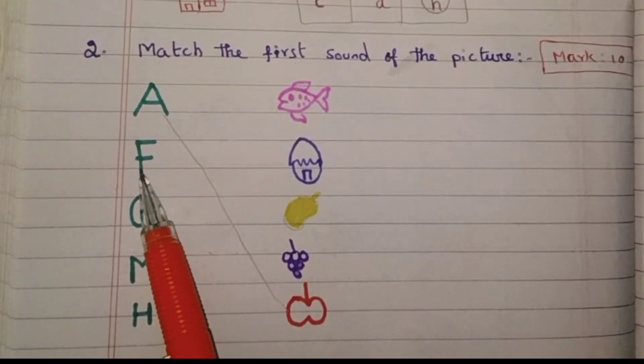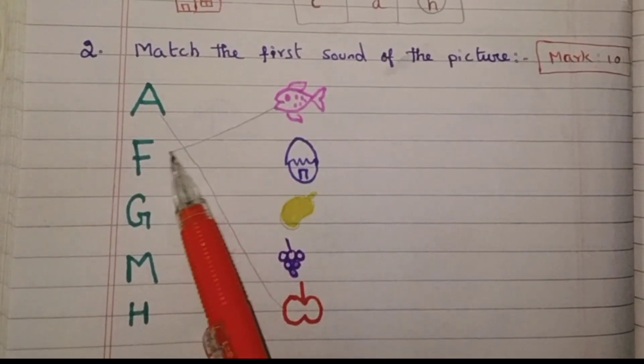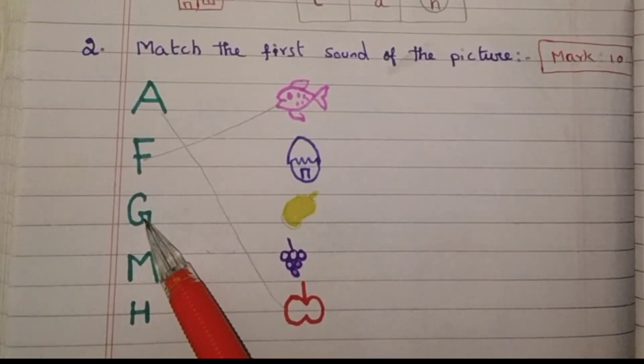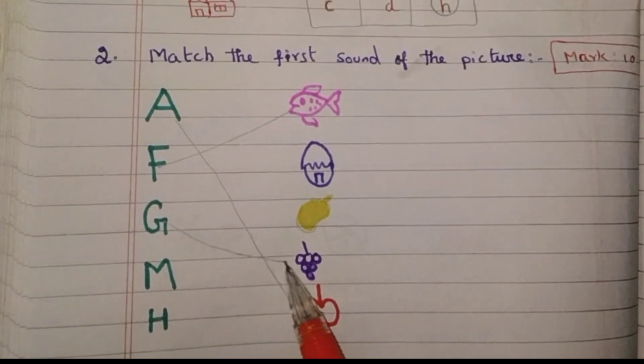Second, F. F for fish. G, G sound. Grapes.